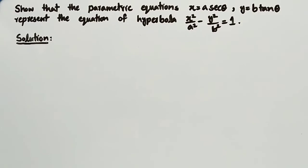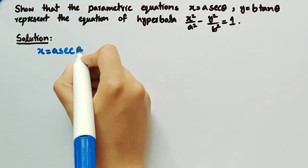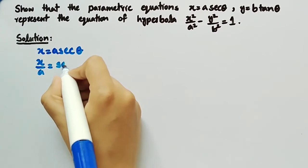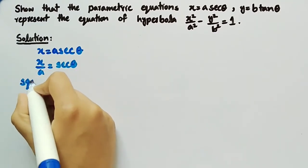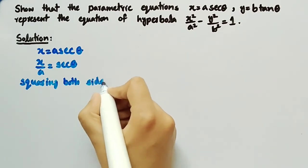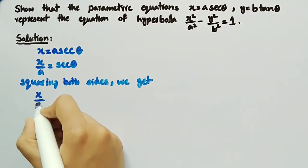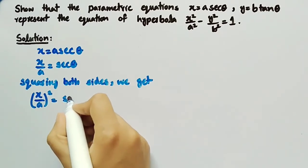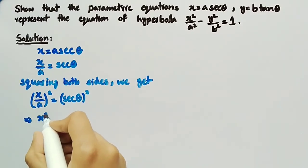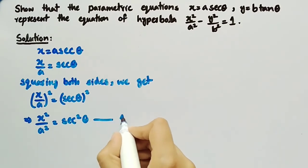Coming towards its solution, it is given that x = a·sec(θ). By dividing both sides by a, we get x/a = sec(θ). Squaring both sides gives x/a whole squared = sec²(θ), which can be written as x²/a² = sec²(θ). Let this be equation number 1.